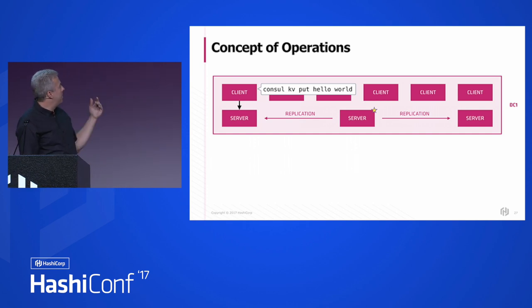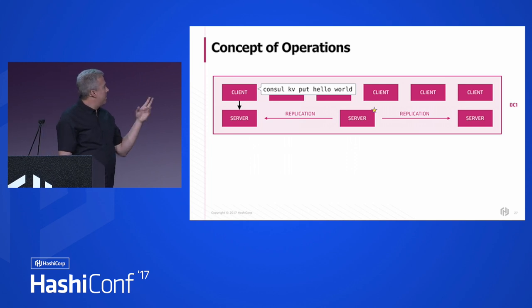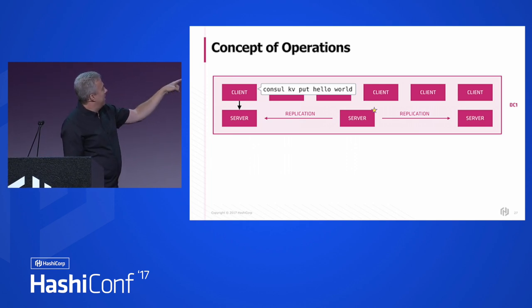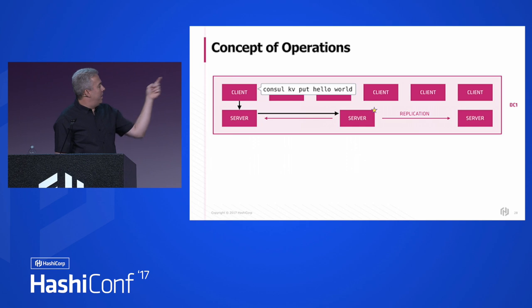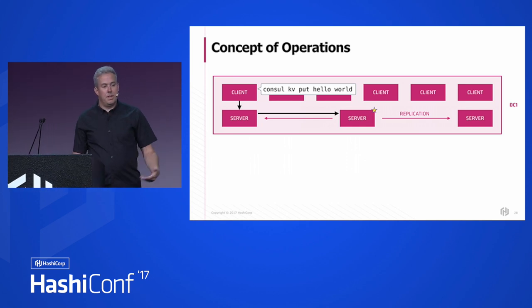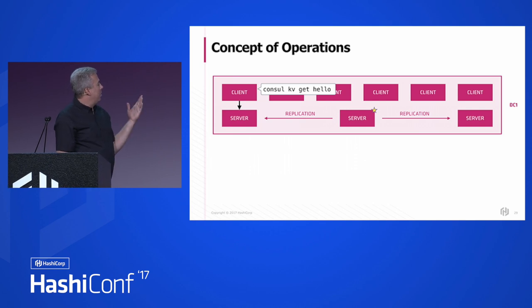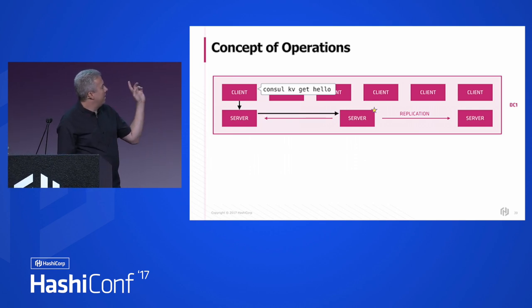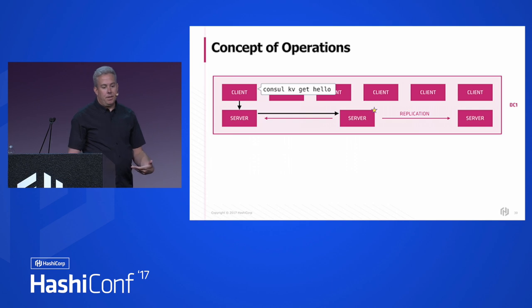Here's a basic example: a client wants to write the word 'world' into the 'hello' key. An application makes a request to that client agent, which forwards the request to one of the servers. It doesn't know who the leader is — it gets internally forwarded to the leader, gets written and replicated. When you want to request that same key back, the same thing happens — in this case, asking the leader to ensure a consistent result. Console offers different modes to read from just any server, but you might get a stale result.